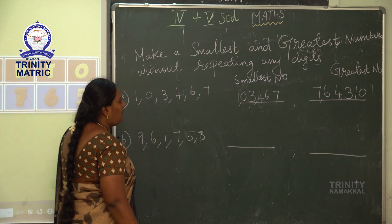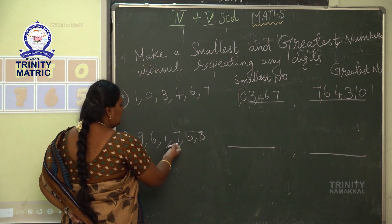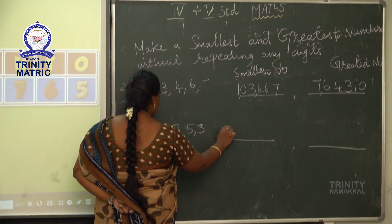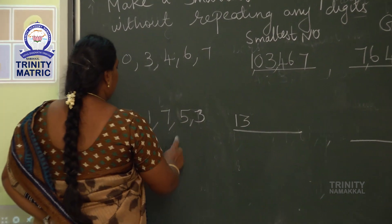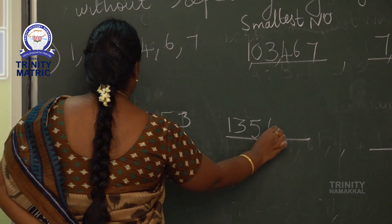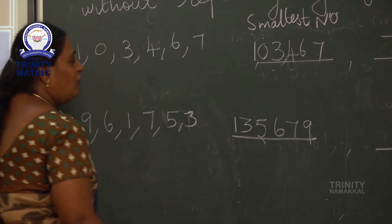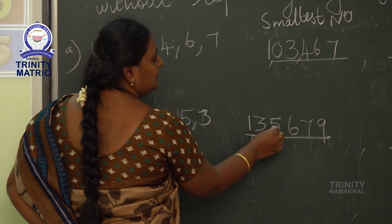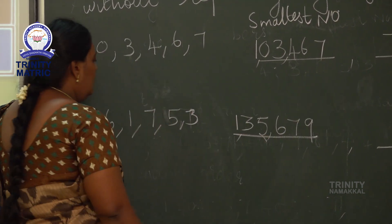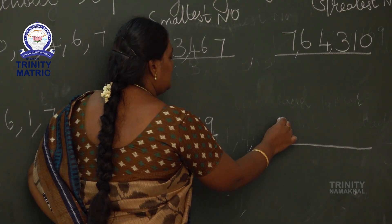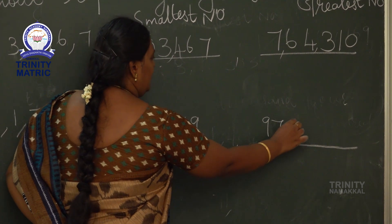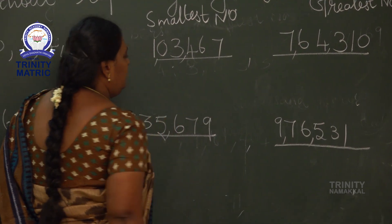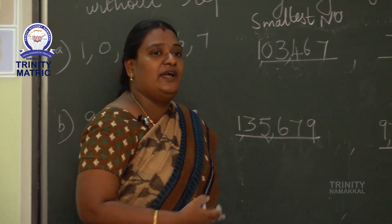Now from another set of digits, form the smallest number. The digits are 1, 3, 5, 6, 7, 9. So the smallest 6-digit number is 1,35,679. Then form the greatest 6-digit number — just reverse: 9, 7, 6, 5, 3, 1. That is 9,76,531.